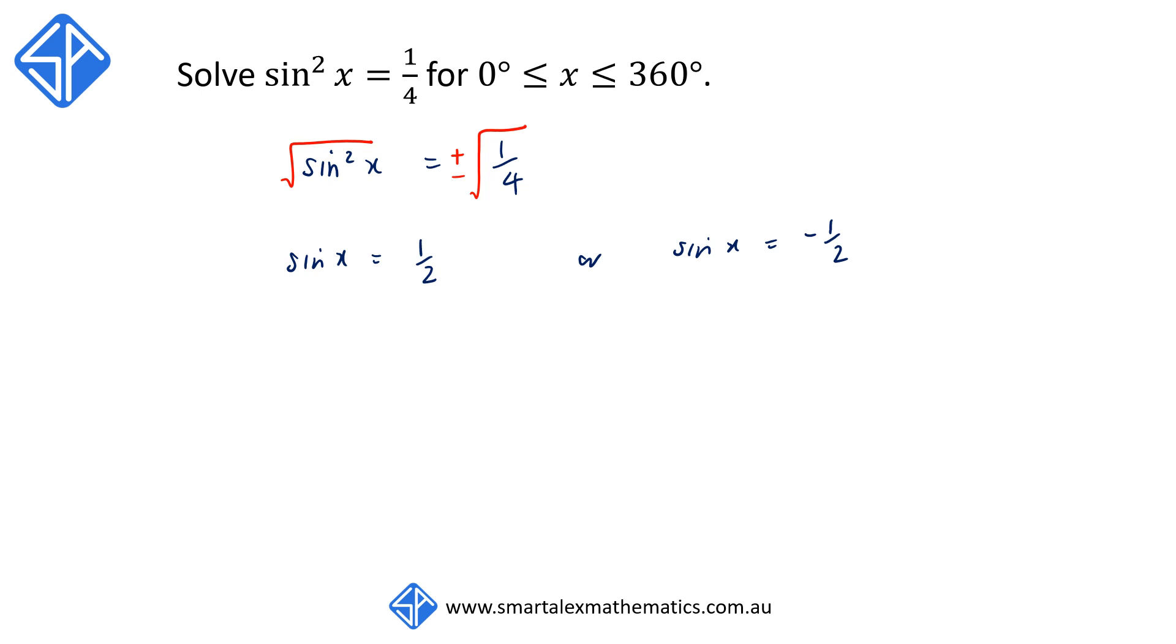When sine x equals positive one half, we're going to get x being in the first or the second quadrant, which means x is 30 degrees or 150 degrees. When sine x equals negative one half, x will be in either the third or the fourth quadrant, which means x is either equal to 210 degrees or 330 degrees.